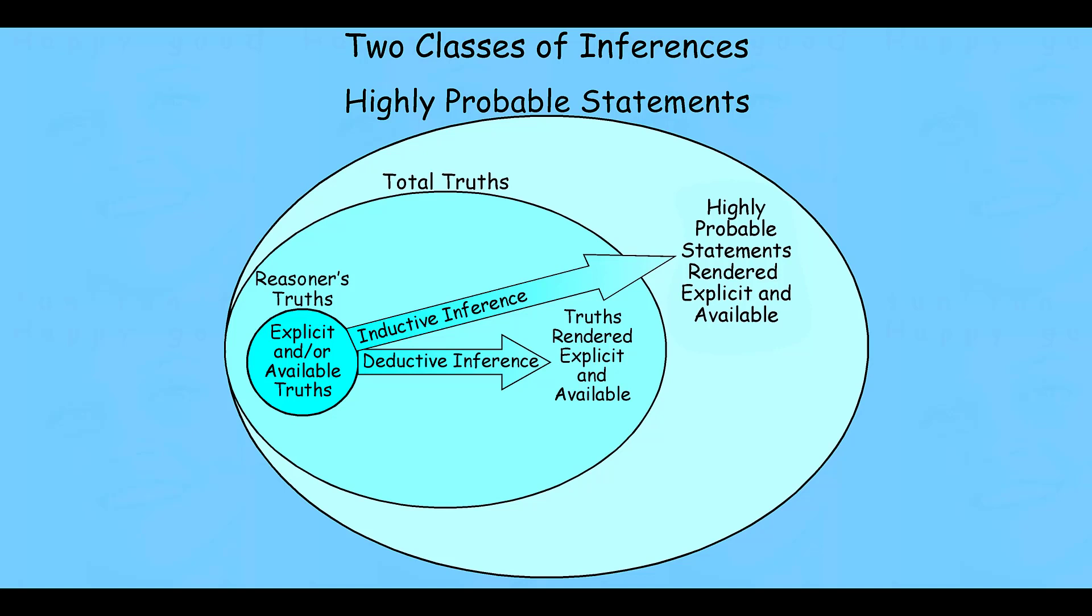And in this way, inductive inferences are said to be amplitive inferences. That is, they increase the scope of what a reasoner has as potentially true about the world. They do so, though, at the cost of introducing a little epistemic risk, that chance that even though they started with good information, the reasoner ends up with something that's likely but actually false.